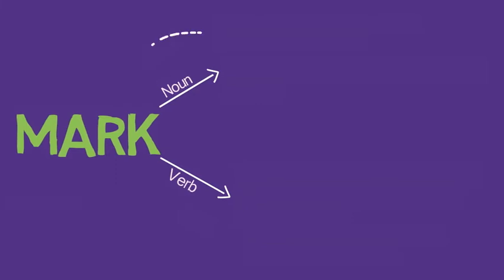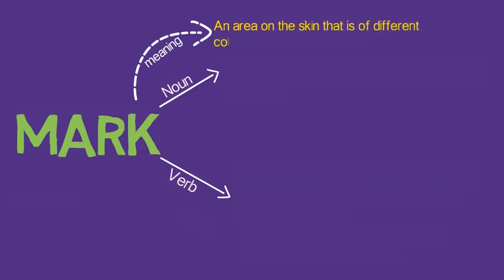So let's do the word 'mark'. The word 'mark' can be used as a noun and as a verb. Used as a noun: an area on the skin that is of a different color from the area around it.